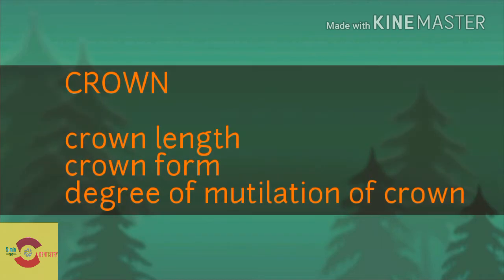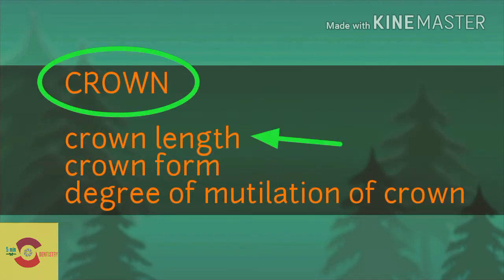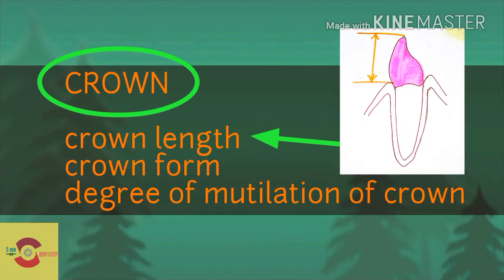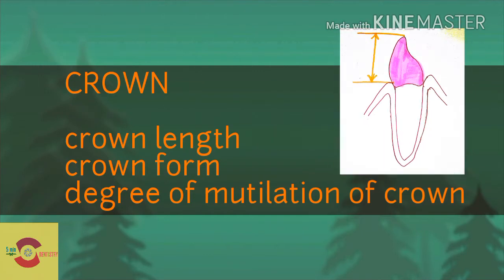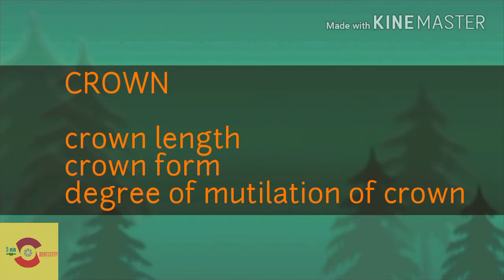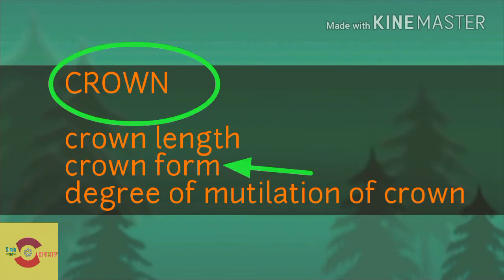Regarding crown length, the abutment must have adequate occlusal-cervical crown length, which is necessary for sufficient retention. Regarding crown form, sometimes a tapered crown interferes with crown parallelism, which necessitates a full coverage crown to improve aesthetics and retention.